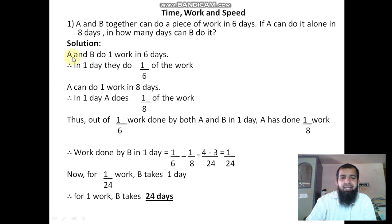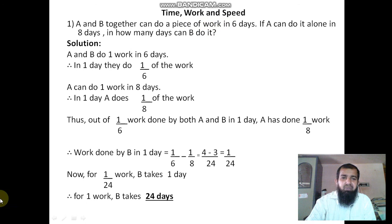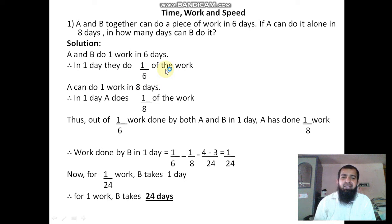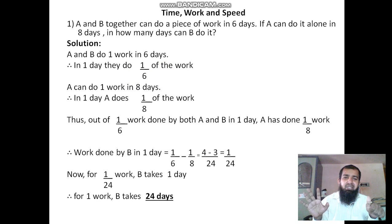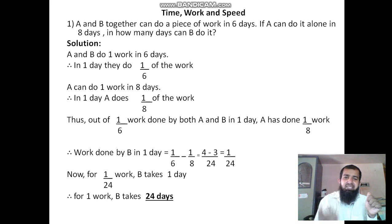Solution: A and B together do one work in 6 days. Therefore, in one day they do 1 by 6 of the work. So in 6 days they do the full work, and in one day they can do 1 by 6 of the work together.